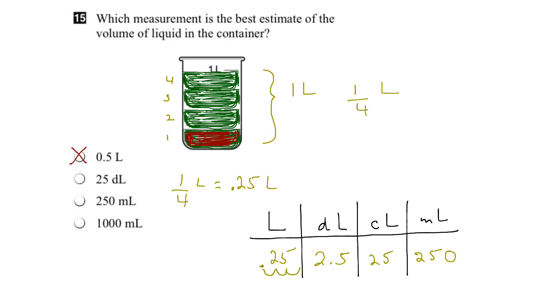So 0.25 liters is 2.5 deciliters, is 25 centiliters, and is 250 milliliters. So if we look down our list of remaining options, we can see that the third one is the right answer. The best estimate for the volume in the container is 250 milliliters. Let's continue.